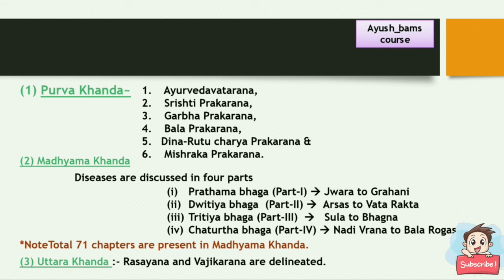In Madhyamakhanda, diseases are described in four parts: Pradhamabhaga (first part) contains diseases from Jhwala to Grahani; Dvitiyabhaga (second part) contains Arshas to Vatarakta; Trithyabhaga (third part) contains Shula to Bhagna; and Chaturthabhaga (fourth part) contains Nadi Vrana to Balarogas. There are a total of 71 chapters in Madhyamakhanda. Uttarakhanda is the last khanda, where Rasayana and Vajikarna are delineated.